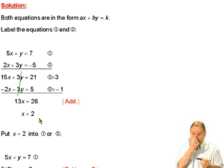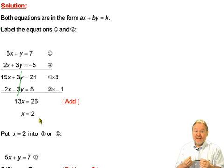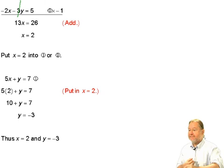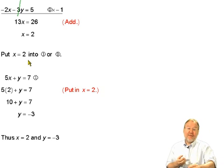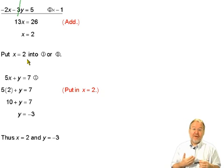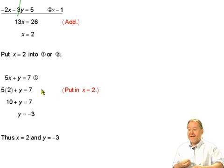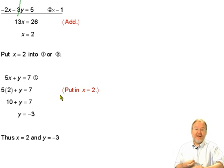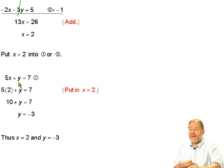Now, be very careful and don't stop now, because the question said solve for x and y. We now have the value of x. So what you do is you put x equals 2 into equation 1 or equation 2. It makes no difference. For this question, I picked equation number 1, which was 5x plus y equals 7.